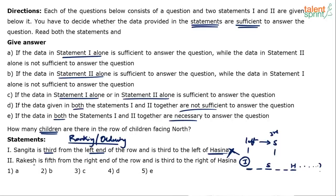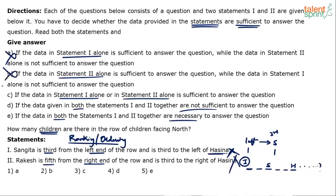Statement two: Rakesh is fifth from the right end of the row and is third to the right of Hasina. Remember the golden rule in data sufficiency — when you look at statement two, forget everything given in statement one. Erase your memory of statement one when checking statement two. Rakesh is fifth from the right end and third to the right of Hasina — same problem. Total number of persons cannot be established. So statement two alone is also not sufficient. Option A, B, and C cannot be the answer.